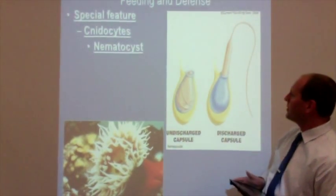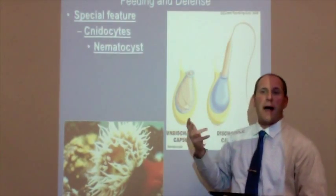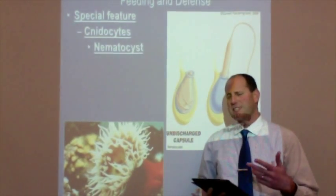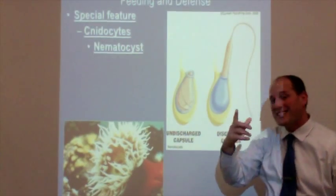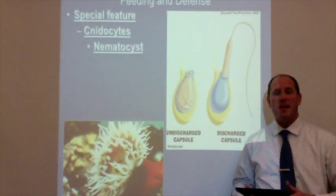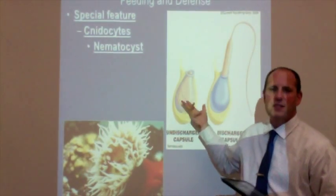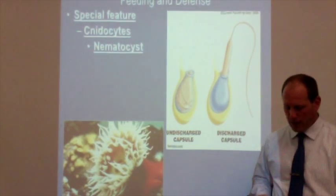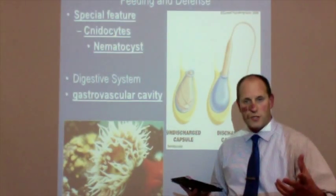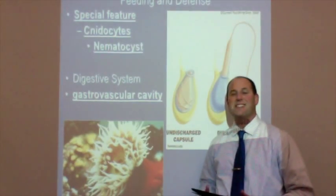Think of the nematocyst like a harpoon — a very long, coiled filament inside the cnidocyte cell. Sometimes there's poison, sometimes it's barbed on the end, other times it's just a long thin coiled filament. It shoots into the prey organism. Since this is one cell with an organelle, there are hundreds of millions of these cells inside each organism. They use these structures as part of their feeding system, with tentacles covered in masses of cnidocytes that fire nematocysts into prey.